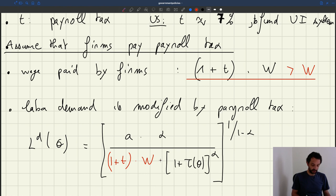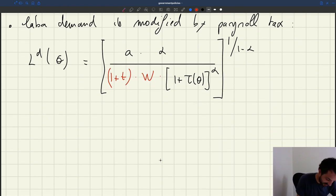So that's the new expression for the labor demand. And as you can see, the payroll tax is influencing the labor demand. And in particular, what we can see is that because the payroll tax here is in the denominator, when the payroll tax goes up, the labor demand is going to fall. It's going to be depressed. And when the payroll tax drops, the labor demand is going to be stimulated.